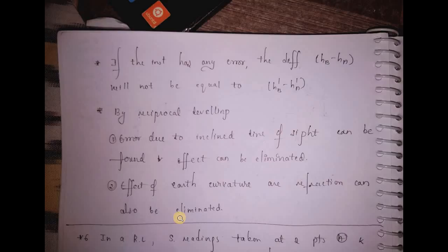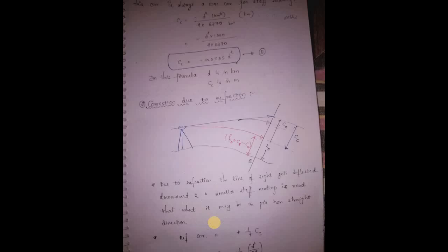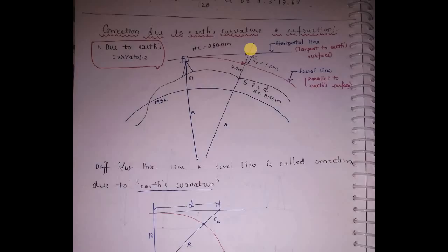Earth curvature and refraction can also be eliminated. The curvature correction CC is positive. If you look at the height of the distance, CC is D squared by 2R, which equals 0.0785 D squared. The refraction correction is negative.